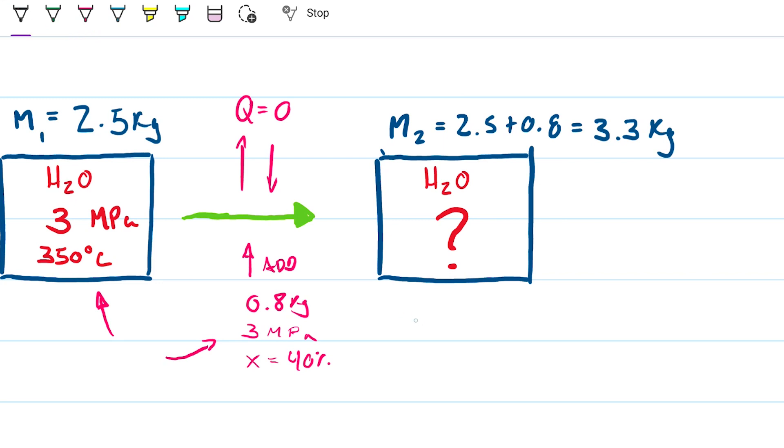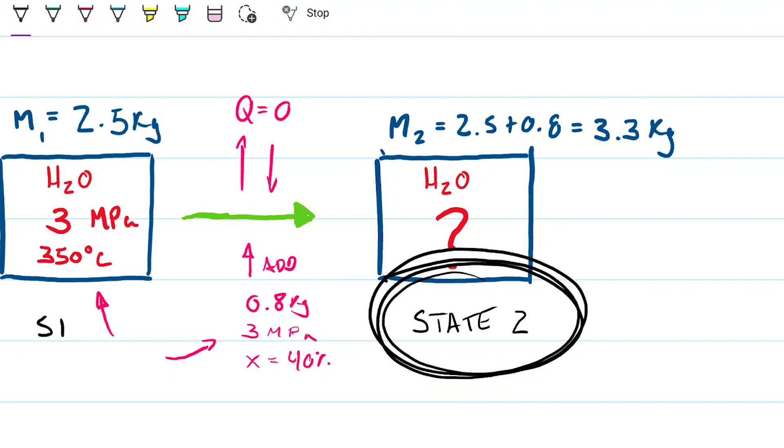So let me go ahead and call this one state number two. This is going to be my state number two. This will be my state one. And what I'm trying to find out is what is the internal energy of this guy here? That's the question, right? And obviously, once I have that internal energy, I can try to define this a bit better.